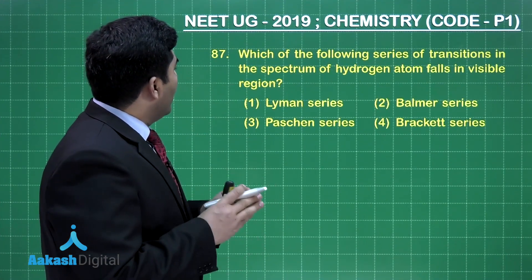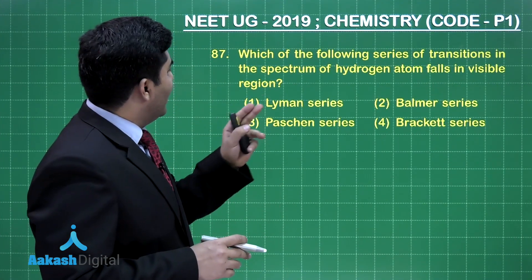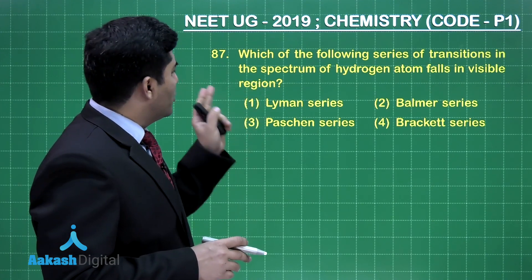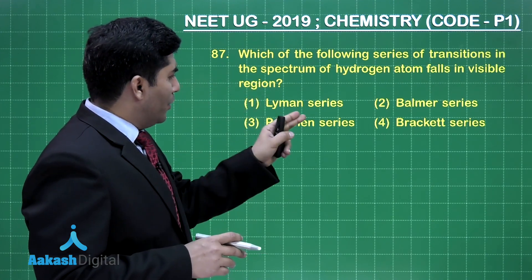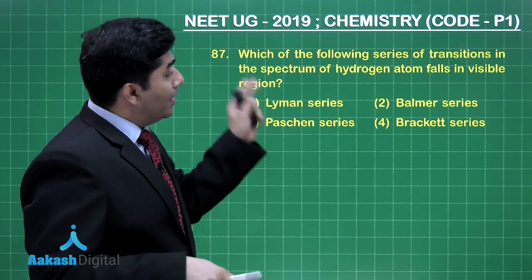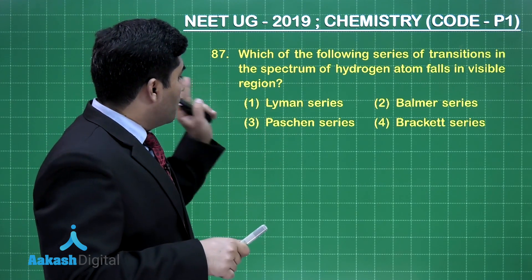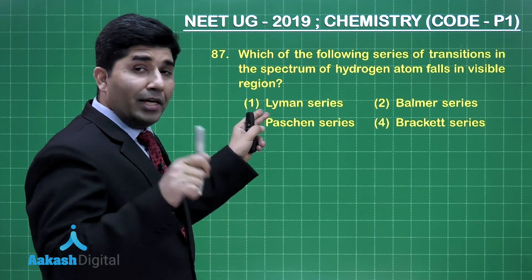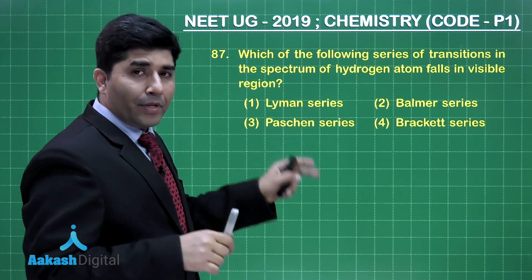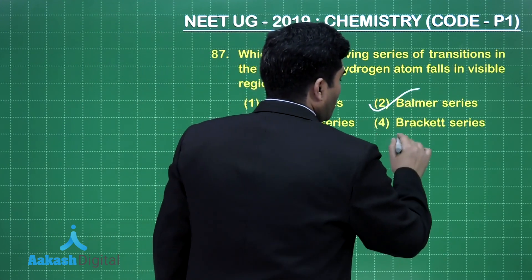In this question, it is asking which of the following series of transitions in the spectrum of hydrogen falls in the visible region. Lyman series is ultraviolet, Balmer series is visible, Paschen series is infrared, and Brackett series is infrared. So the answer is option number 2.